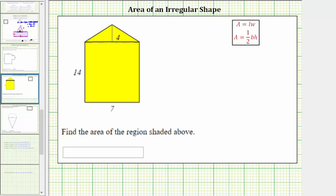the total area, or the area of the pentagon, is equal to the area of the rectangle which is length times width, plus the area of the triangle which is one-half base times height.